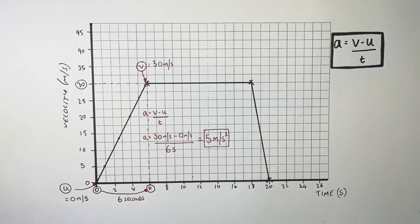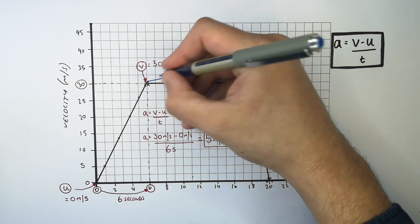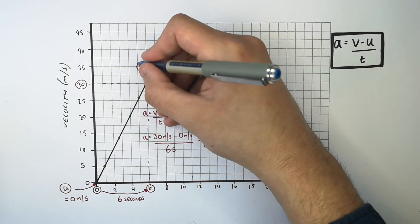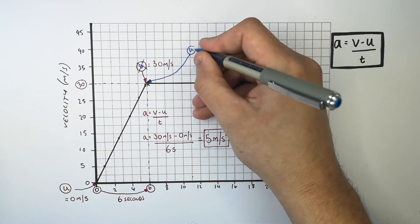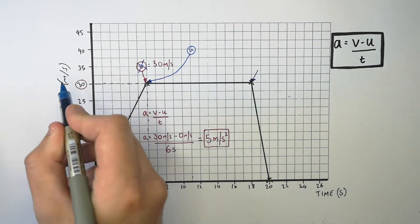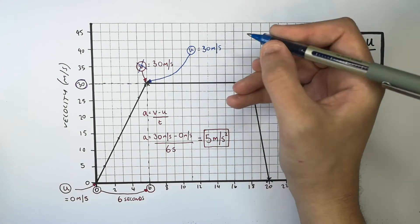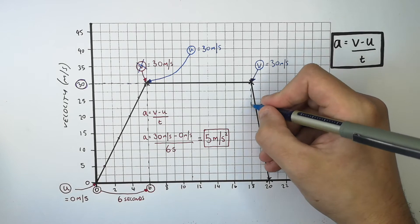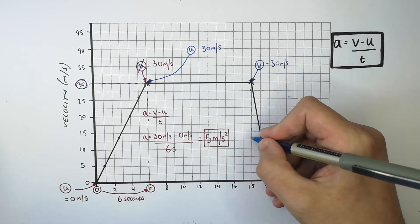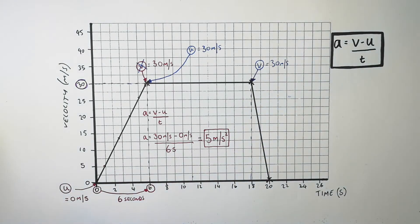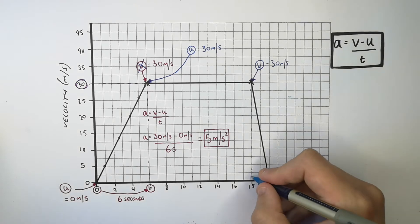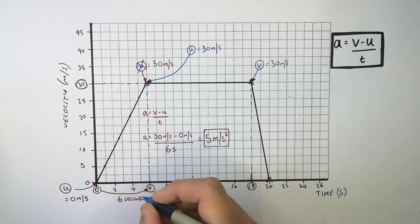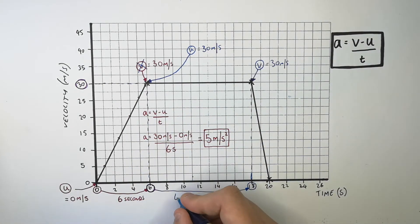We're now going to calculate the acceleration of the object between 6 seconds and 18 seconds of the journey. The initial velocity u is now 30 metres per second, and the final velocity v is also 30 metres per second. The time the car was travelling at constant velocity was 18 seconds minus 6 seconds, which gives a time of 12 seconds.